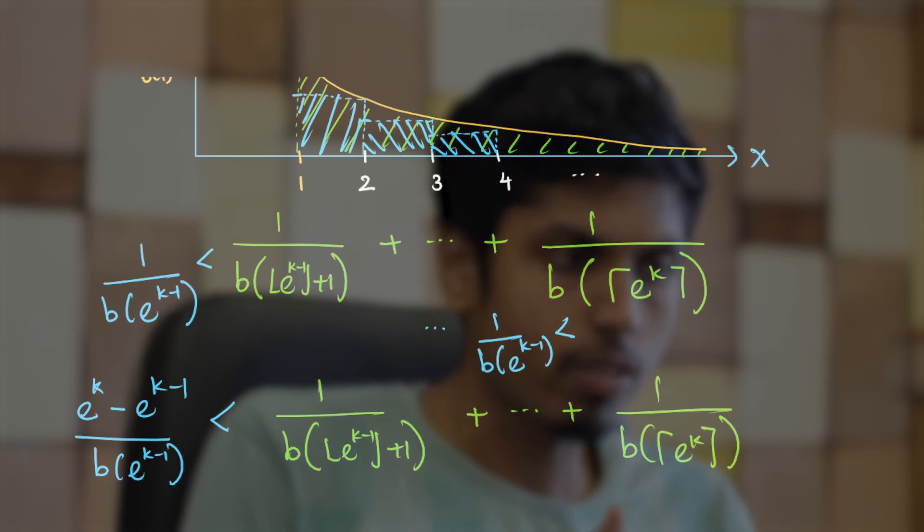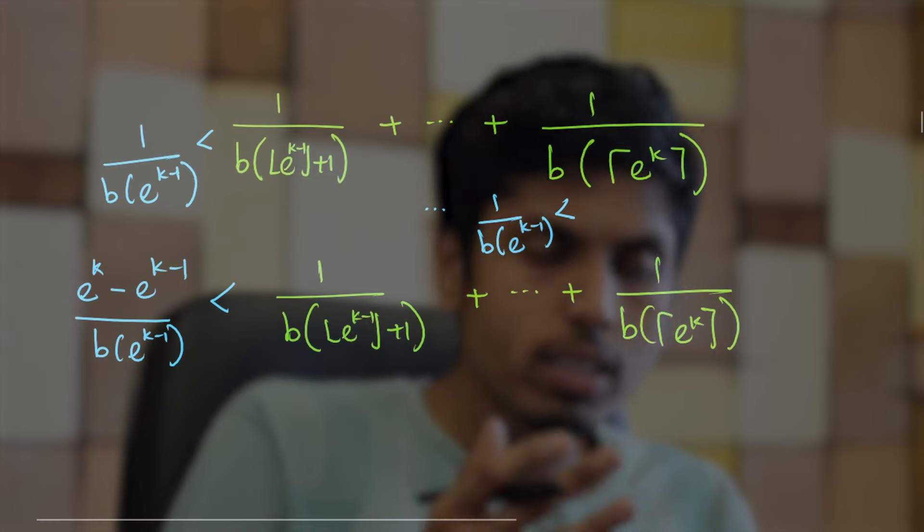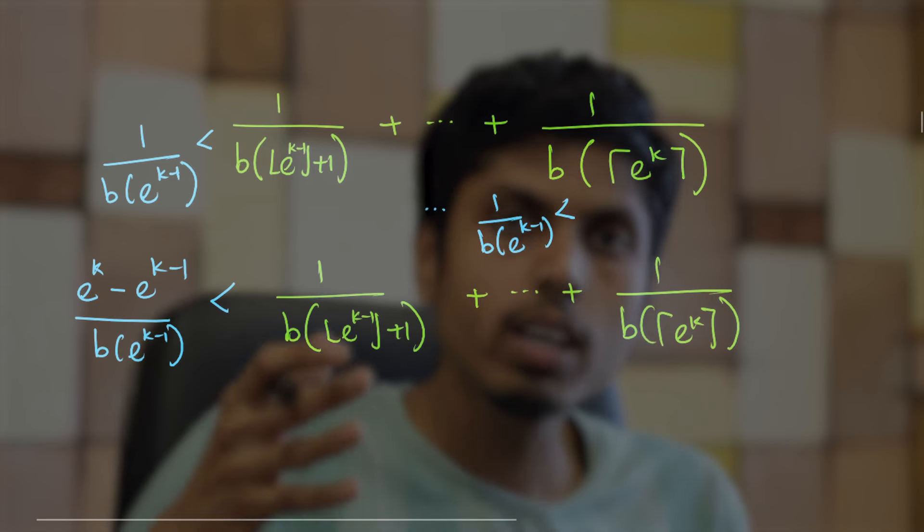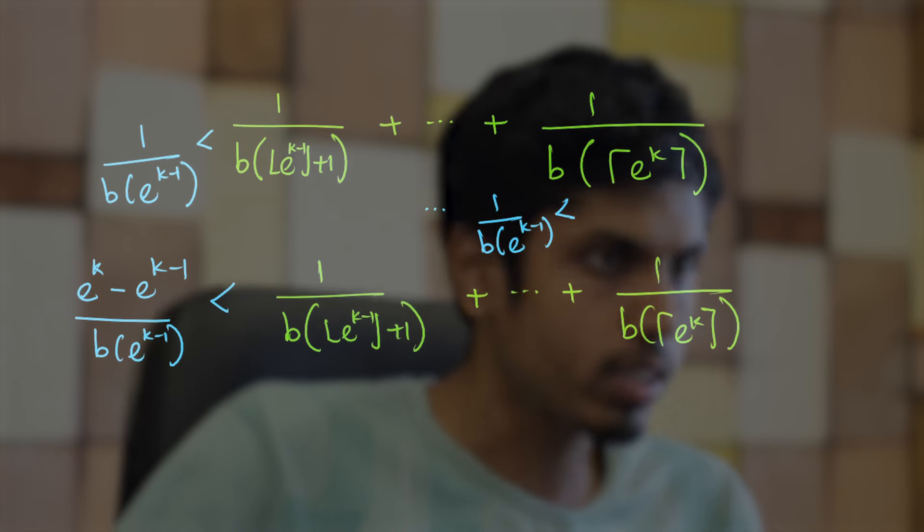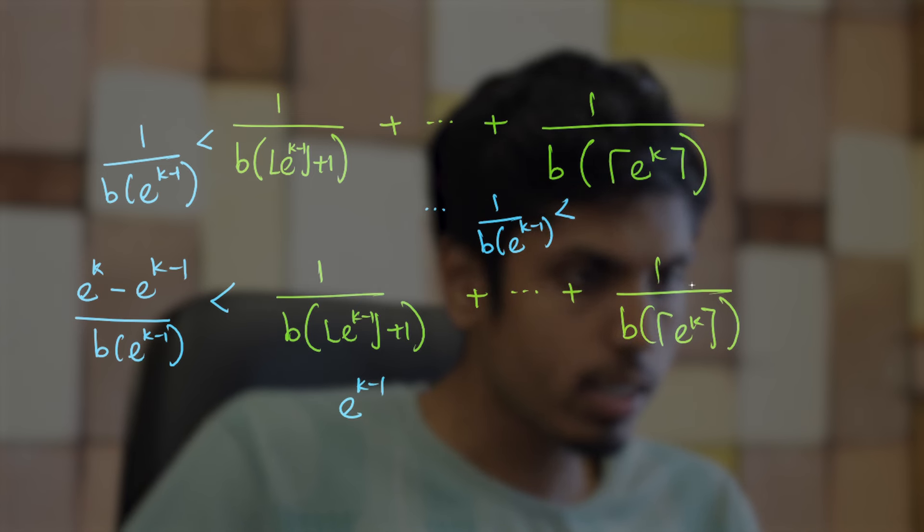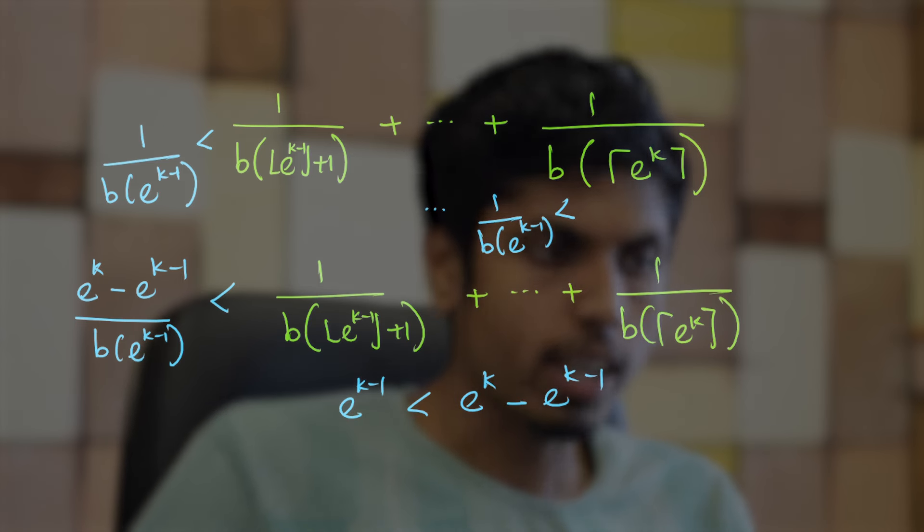Now, if you vary k starting from 1 to infinity, you will see that this sum in the RHS would be less than summation 2/b(n) that we were discussing. Before taking the summation, also notice that e^(k-1) is less than e^k - e^(k-1). Again, k is greater than or equal to 1 where k is a natural number.